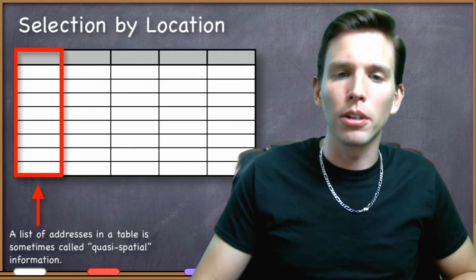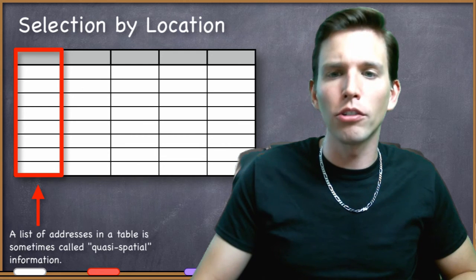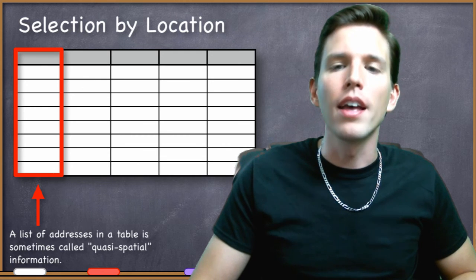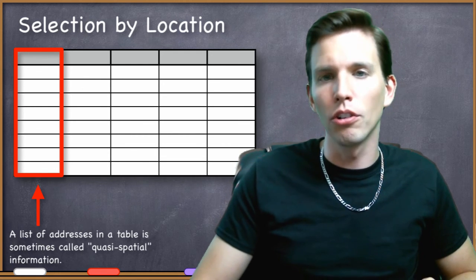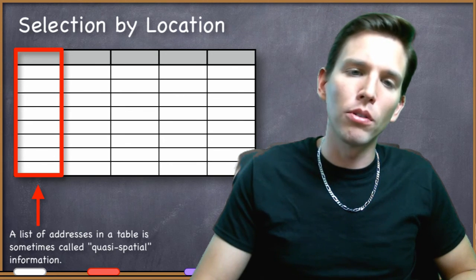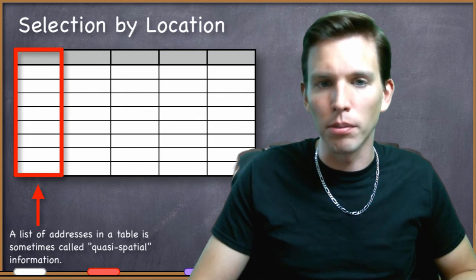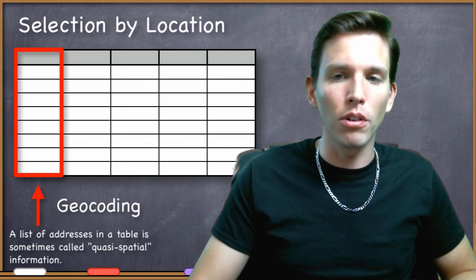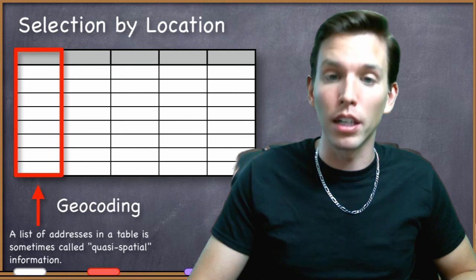However, there are methods to convert this quasi-spatial data into geometry if you want to expand the kinds of geographic analysis that you do. Actually, the process by which you use a computer to convert addresses into points on a map is called geocoding, and we'll talk about that specifically in a future video.